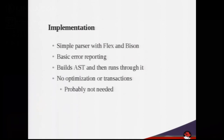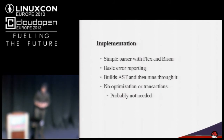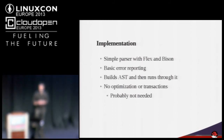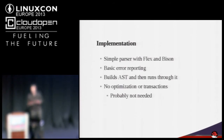The implementation is pretty simple. It's just a flex lexer attached to a bison parser, which allows basic error reporting — tracking which line of the file it's on and which column, so it can report syntax errors. The way it works is it builds a syntax tree from a script, which stores all of the statements down the left-hand side. After building the syntax tree it traverses and interprets it. There's no fancy optimization or transactions at the moment, but it would be easy to add those.